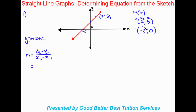Since I've called these brackets one and two, in bracket two x and y are x₂ and y₂, and in bracket one we have x₁ and y₁. Substituting in: y₂ is five, minus y₁ which is zero, over x₂ which is two, minus x₁ which is negative two.